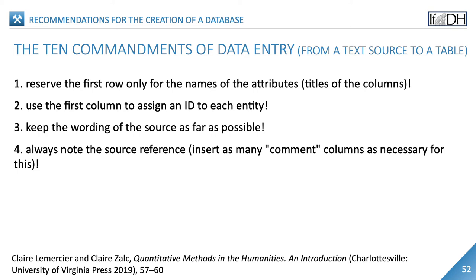Columns that mix information from different sources without specifying what comes from where cause many problems at the stages of data processing and publication. More generally, include as many comment columns as necessary, or put brackets in regular columns to mention a particular source of information, a choice about transcription or a categorization, a doubt about a symbol, and so on. Avoid the kind of comment function that creates bubbles — these are difficult to read and if you have more than a few, they cannot be searched or sorted.